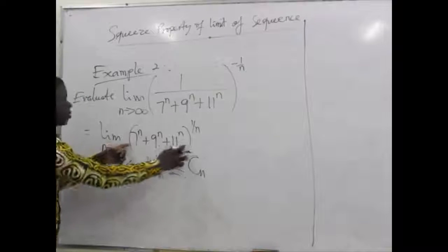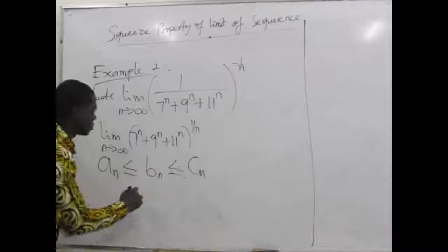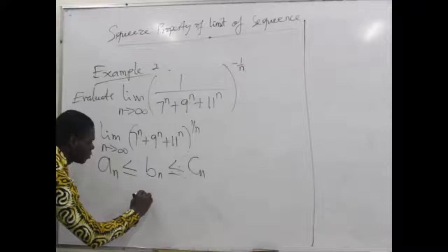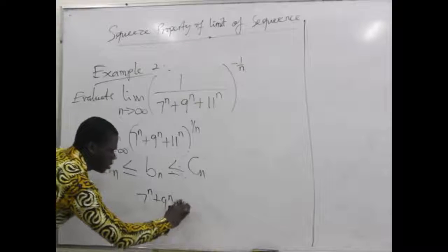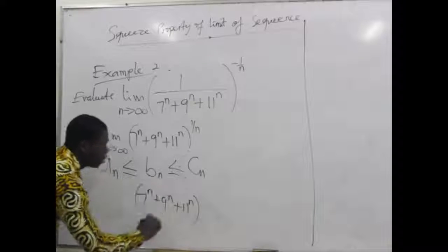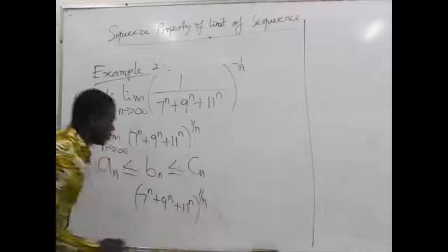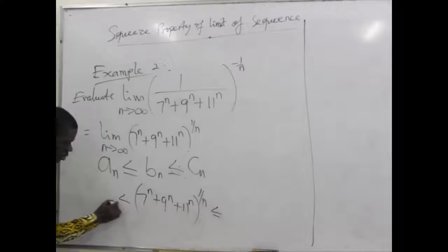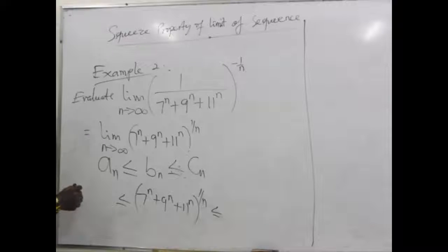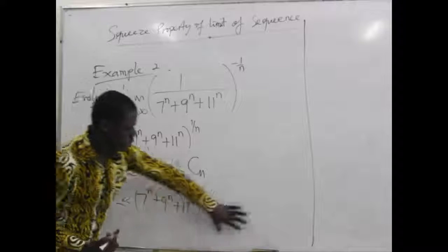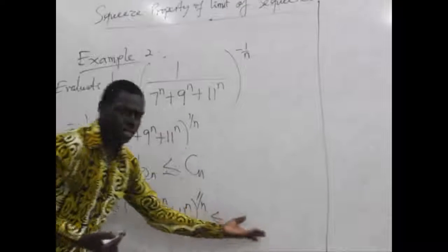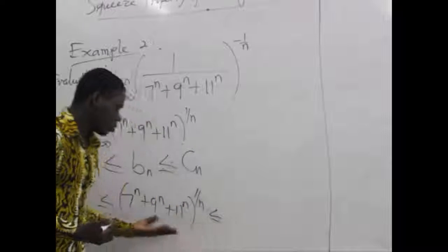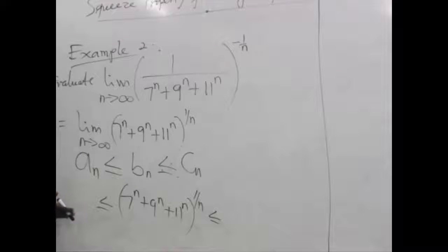We put whatever we are looking for here. We have (7^n + 9^n + 11^n)^(1/n), less than or equal to, less than or equal to. We want to put another sequence here that will be greater than or equal to what we have, and another one here which will be less than or equal to what is here.